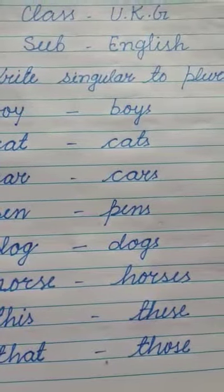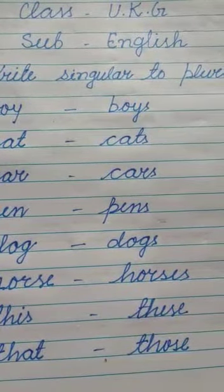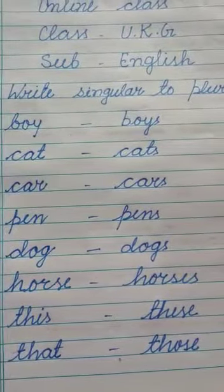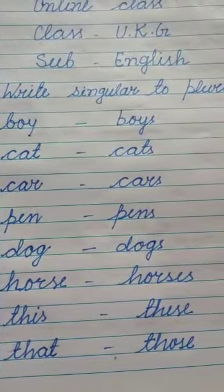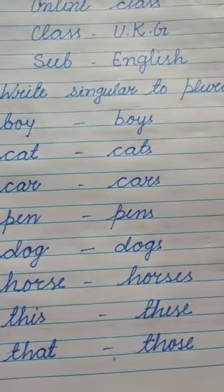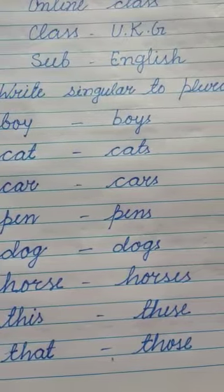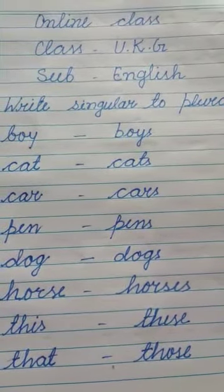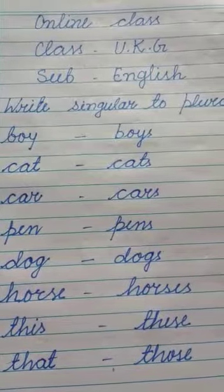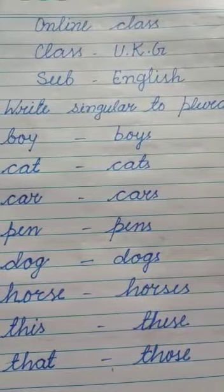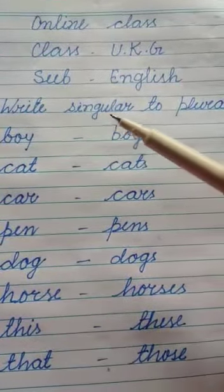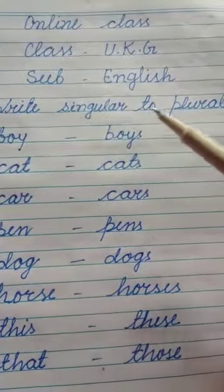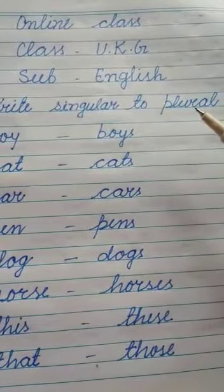Hello students, I am Baby Kumari, English teacher of Mahatma Gandhi Sikshan Sansthan Darbhanga. Today I am going to teach you how to make singular to plural. Singular means one and plural means many. Write singular to plural. Singular se plural banana hai.